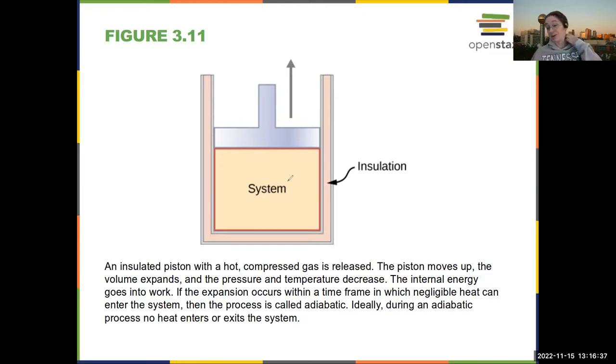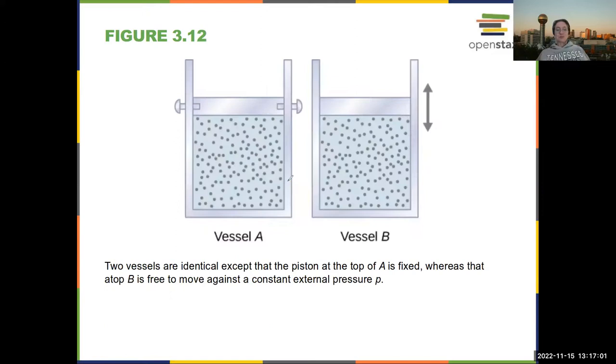Adiabatic, actually we haven't talked about entropy yet, but adiabatic corresponds to constant entropy. So we talk about isothermal, which is constant temperature, isobaric, which is constant pressure, isochoric, which is constant volume, and then adiabatic, which is constant entropy.